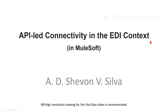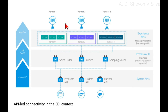This presentation covers API-led connectivity in the EDI context. In the EDI context, the API-led approach provides flexibility to serve different partners, as well as control over core systems. Using the retail industry as an example, the following diagram shows how API connectivity can coexist with EDI.